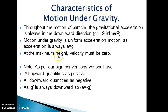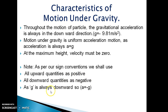Throughout the motion, gravitational acceleration is always in the downward direction, given by g = −9.81 m/s², as we consider the downward direction as negative. At maximum height, velocity is 0. Note: we shall use all upward quantities as positive, all downward quantities as negative, and acceleration g is always downward so a = g.